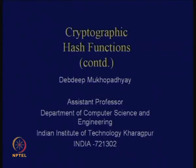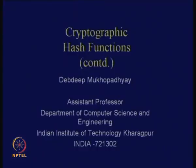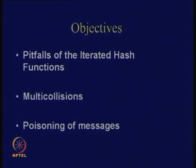We will continue with cryptographic hash functions. In the last class, we saw the Merkle-Damgård construction and discussed proofs for the security of that construction. The main claim was that if the compression function was collision resistant, then so is the hash function, but this was under certain assumptions like the ideal hash model. If that assumption is not maintained, then these proofs do not hold. Today we will see the pitfalls of this construction in the practical world.